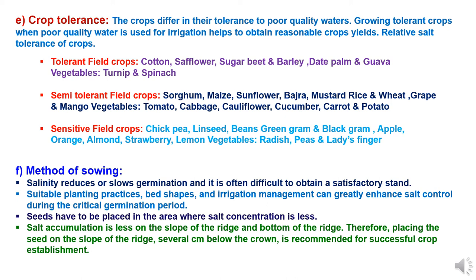Sixth method is method of sowing. Saline water may impact germination, so suitable planting practices, bed shapes and irrigation management practices should be adopted which enhance salt control during germination, which is a critical phase. Seed placement should be done at less salt-concentrated areas, and seed should be placed on the slope of the ridges as there is less salt accumulation at this place.